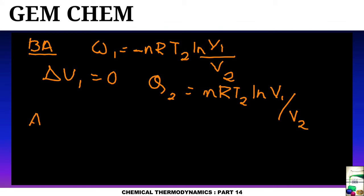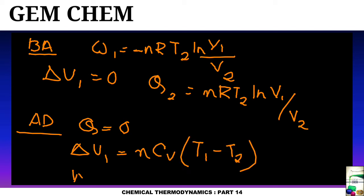For AD, if you consider, which is adiabatic expansion, Q must be equal to 0, and delta U1 comes to be as nCV T1 minus T2. Just as we have seen for Carnot cycle, just determine the initial and the final steps.